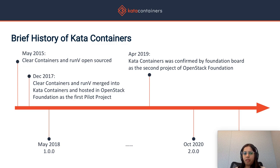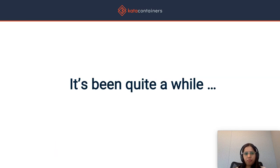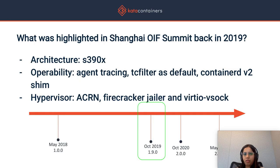Following that, in April 2020, we made our second major release where we introduced quite a few architectural improvements. It's been quite a while since our last update and there's a lot to catch up on. There have been a bunch of new cool features and improvements that have gone into Kata since then. Our last update was at the Shanghai OIF Summit back in 2019.